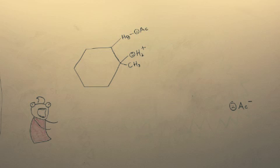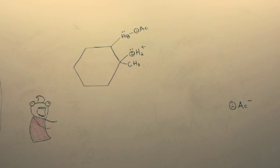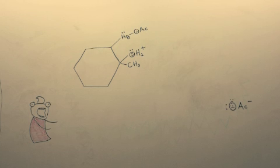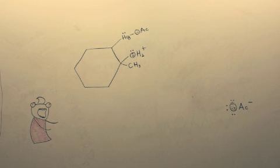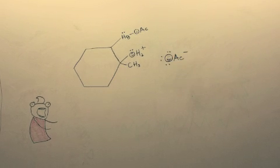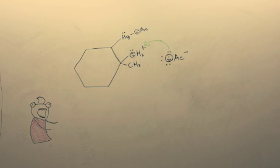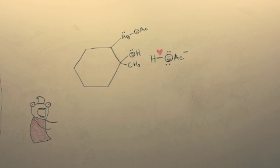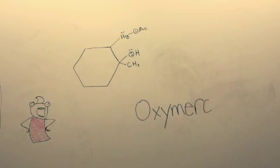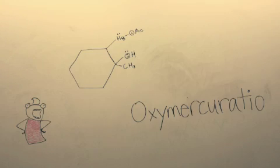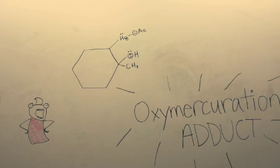Forgot our electron pairs — there we go. So then the lonely OAC has an idea and it's happy again. It decides to come on over and visit the H2-plus on the oxygen connected to the more substituted carbon, and it's true love! The OAC falls in love with one of the hydrogen atoms and carries it off to their own happily ever after. What's left behind we like to call an oxymercuration adduct.